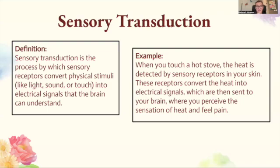Sensory transduction is the process by which sensory receptors convert physical stimuli — like light, sound, or touch — into electrical signals that the brain can understand. So when you touch a hot stove, the heat is detected by the sensory receptors in your skin. These receptors convert the heat into electrical signals, which are then sent to your brain where you receive the sensation of heat and feel pain.